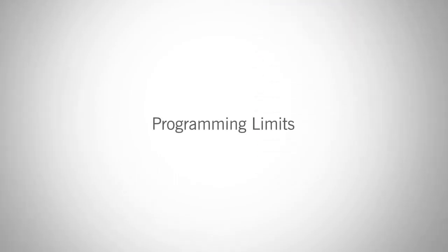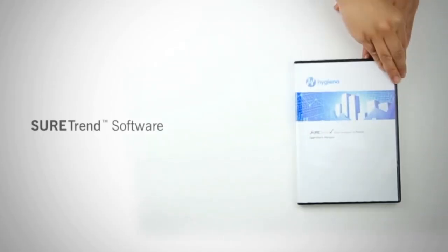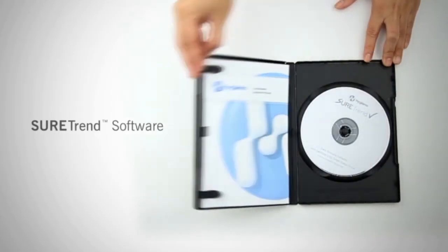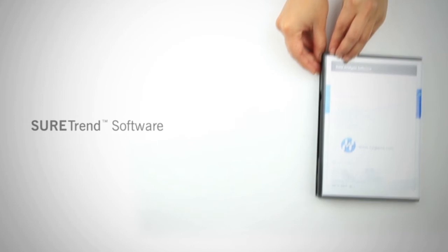Now that you've established your custom limits, we will discuss programming those limits. You can manually adjust the pass-fail limits on the instrument through the menu option Programs. Or, to get the most out of your monitoring system and be able to run charts and graphs with your test results, program your locations using SureTrend software and sync to your meter.